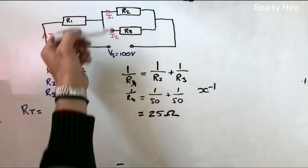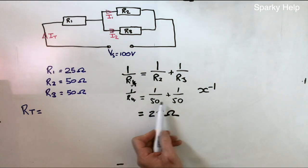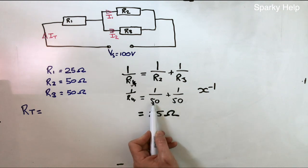This happens to be the case, because I've chosen it, that when you have the same in parallel, you just take one of them and divide by the number of them. So there's both of 50, there are two of them, so 50 divided by 2 is 25.